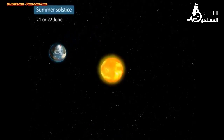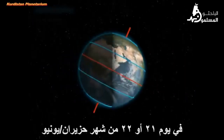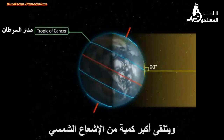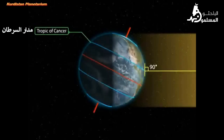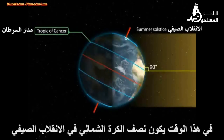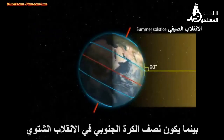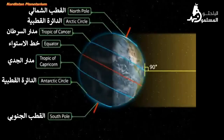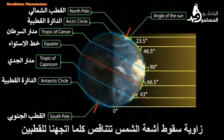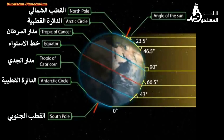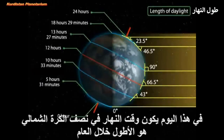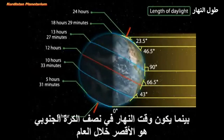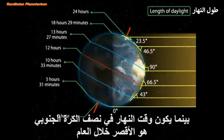Summer solstice: on the 21st or 22nd of June, the overhead Sun is over the Tropic of Cancer, which receives the largest amount of solar radiation. At this time, the northern hemisphere is in the summer solstice, while the southern hemisphere is in the winter solstice. The angle of the Sun decreases towards the poles. On this day, the length of daytime in the northern hemisphere is the longest in the year, while that of the southern hemisphere is the shortest.